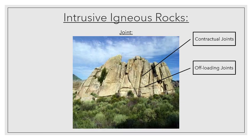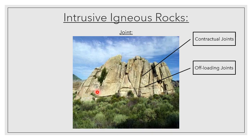That is the different joints. When granite cools beneath the surface of the earth, we form contractual joints — these vertical joints that run down the body of the granite. Along with that, we've got horizontal offloading joints. As the overlying sedimentary layers are eroded, we form offloading joints in the granitic bodies.